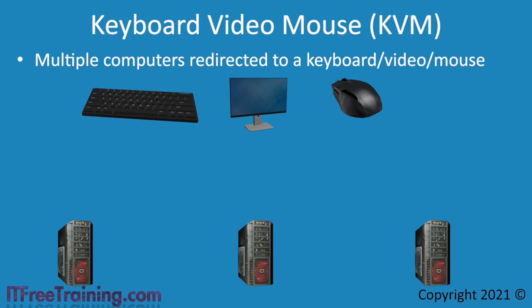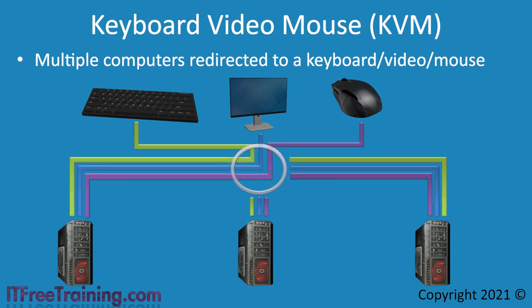This is where a KVM comes into play. In this example, the three servers are connected to the same KVM. At any one time, one server is connected to the keyboard, video and mouse. To change this, press the button, usually at the front of the KVM, to select which computer you want. Some KVMs may change the computer being used by you pressing a key sequence on the keyboard.